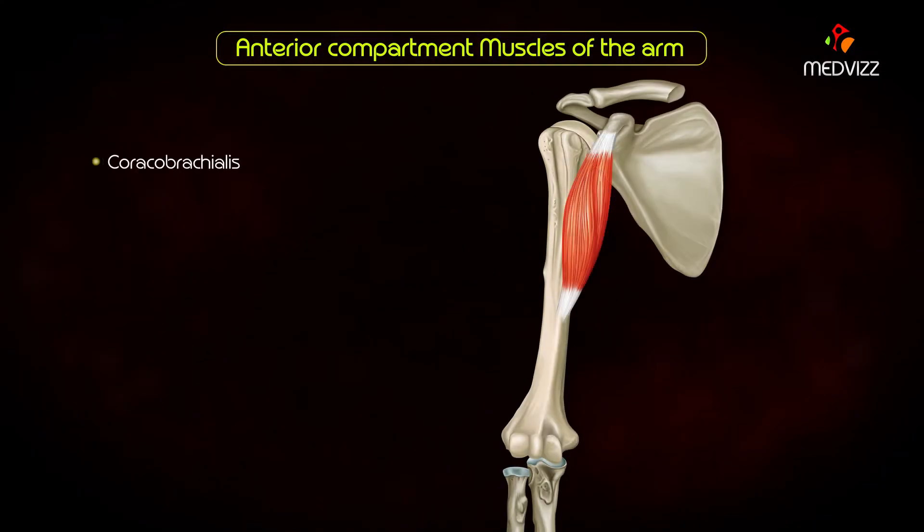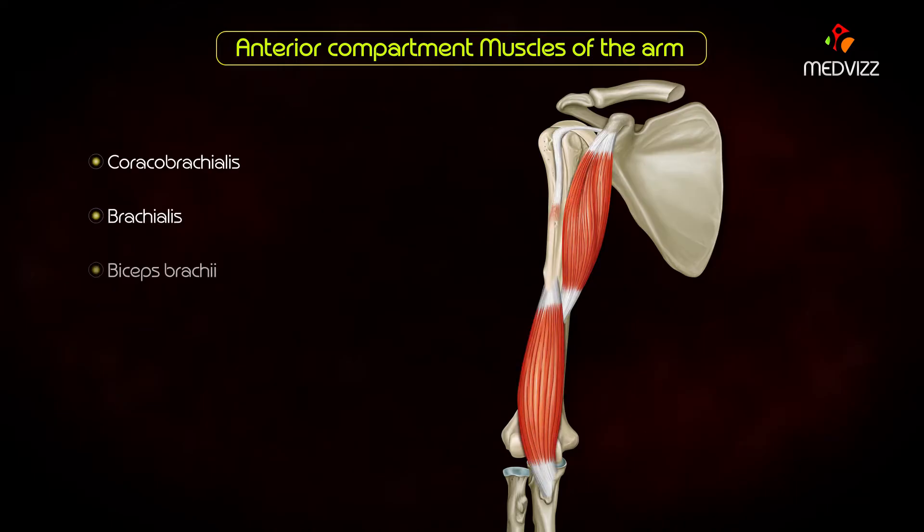The anterior compartment muscles are coracobrachialis, brachialis, and biceps brachii.